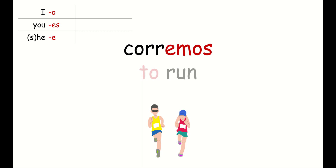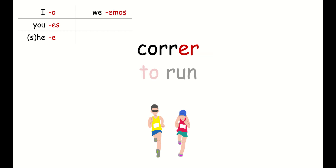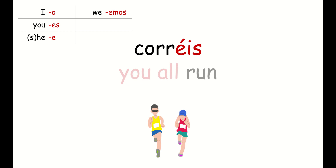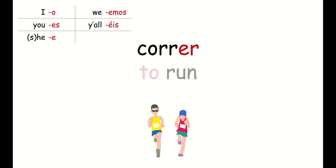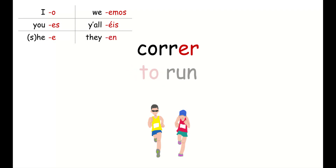We take off the ER ending and say emos — corremos — meaning we run. For you all, you add the éis ending to correr — corréis — meaning you all run. And finally, corren means they run. So now we have our six endings for our six different grammatical persons for conjugating verbs that end in ER.